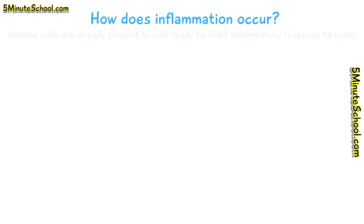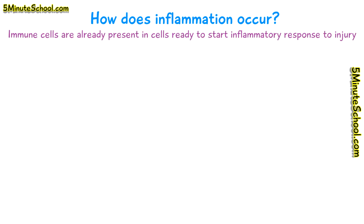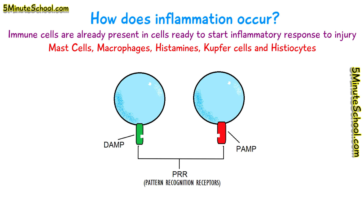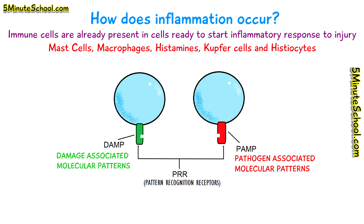In tissues there are immune cells which are ready to react and start an inflammatory response. Examples of these immune cells are mast cells, macrophages, Kupffer cells and histiocytes. These immune cells have receptors on their surfaces, generally known as pattern recognition receptors (PRRs). There are two types: DAMPs and PAMPs, which stand for damage-associated molecular patterns and pathogen-associated molecular patterns. The immune cells are activated via their PRRs depending on whether there is a presence of a pathogen like an antigen, or if there is cell damage.